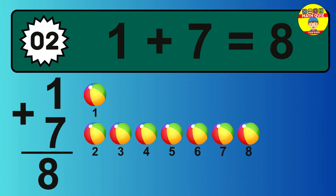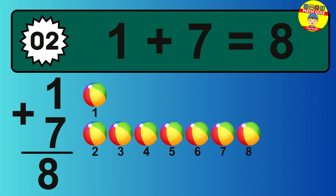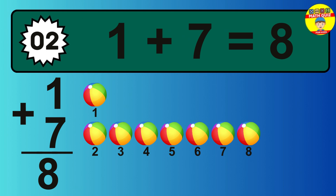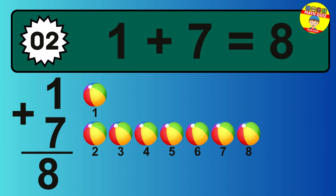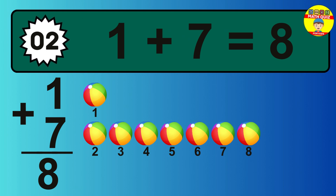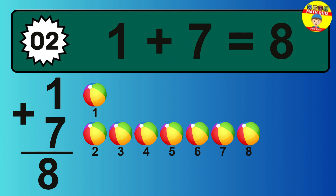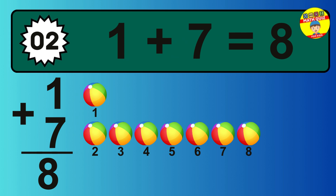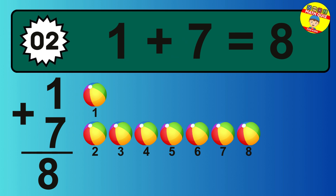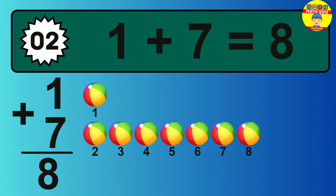So the answer is 1 plus 7 is 8. Let's count it: 1, 2, 3, 4, 5, 6, 7, 8.